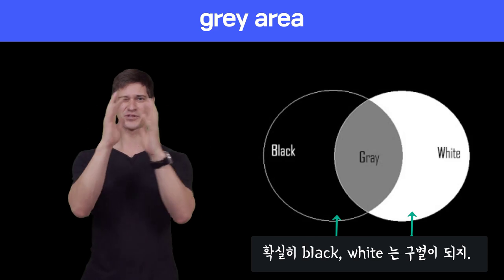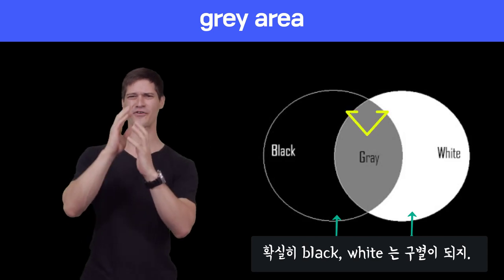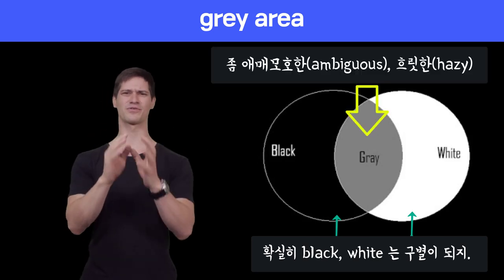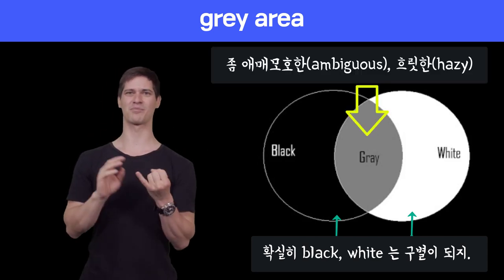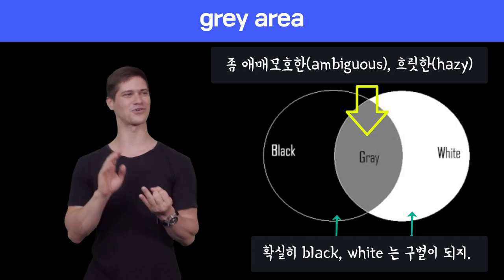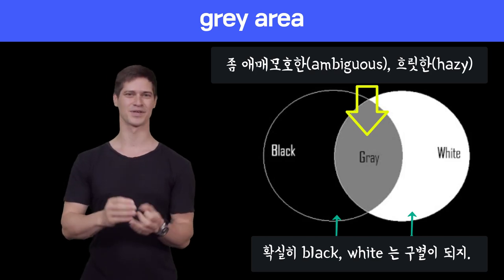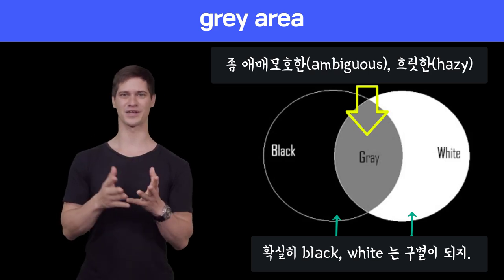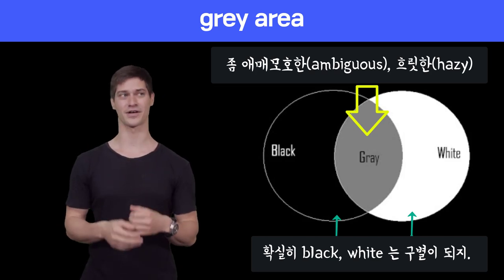But in between, there's a gray area, and it's not that well-defined. It's a little ambiguous, it's a little hazy, and you're not quite sure what it is. That's a gray area.